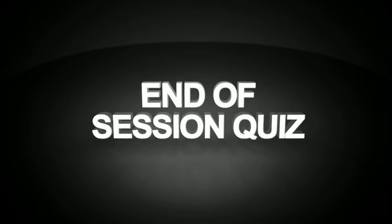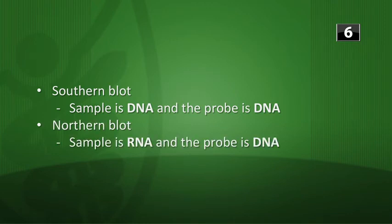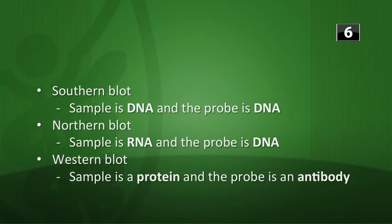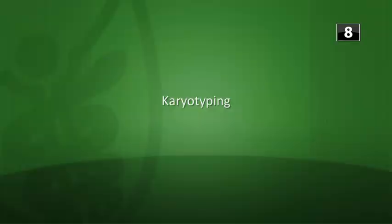All right, that's it for genetics. Let's go ahead and do the end of session quiz. First question: what's the difference between southern blot, northern blot, and western blot? With the southern blot, the sample is DNA and the probe is DNA. With the northern blot, the sample is RNA and the probe is DNA. And then with the western blot, the sample is a protein and the probe is an antibody. Next, what type of test uses a known antigen to discern the presence of an antibody? That's the ELISA test. And the last one: what type of test is performed in order to diagnose chromosomal imbalances? That's going to be karyotyping.